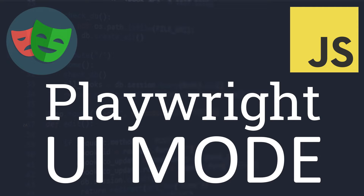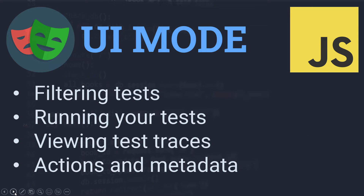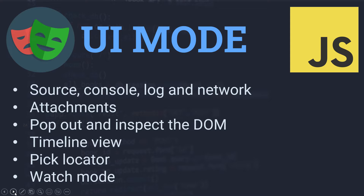Hello everyone and welcome to this Playwright tutorial. In this tutorial we will learn about the Playwright UI mode. You can explore, run, and debug your tests with a time travel experience, complete with watch mode. In the UI mode you can filter your tests, run your tests, view test traces, see actions metadata, source, console log, network attachments, DOM, and timeline.